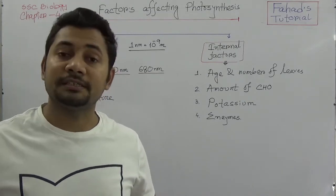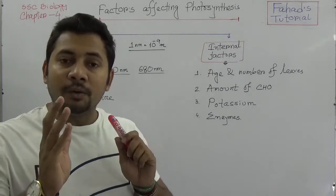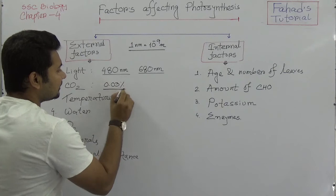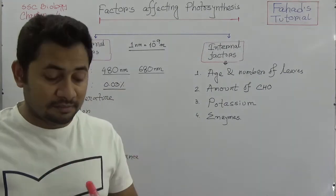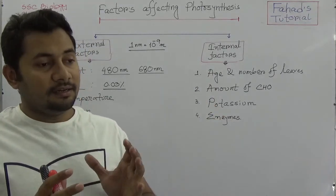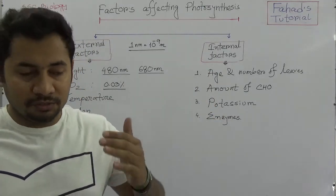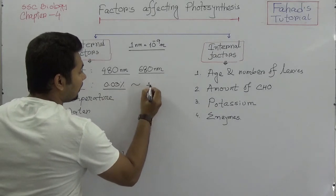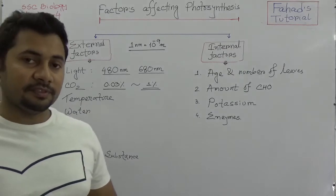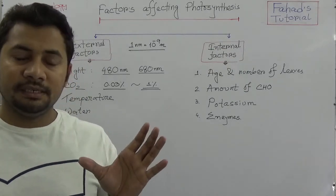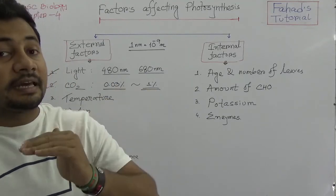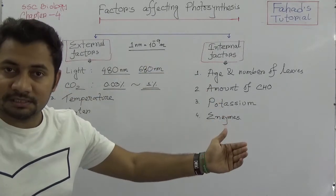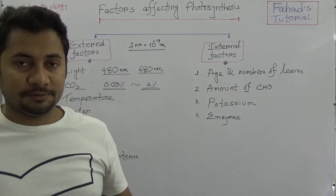Carbon dioxide is also an external factor affecting photosynthesis. In our atmosphere, about 0.03% carbon dioxide is present. With current industrial activity, this can vary. The concentration can go up to 1% — if the atmosphere has 1% carbon dioxide, the mesophilic tissues can carry out photosynthesis effectively.